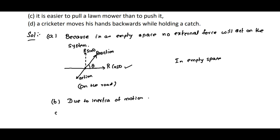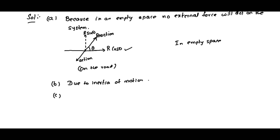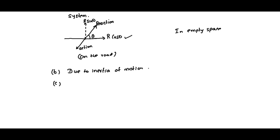Coming to (c): it is easier to pull a lawnmower than to push it. We can take the free body diagram for this. This is the lawnmower.